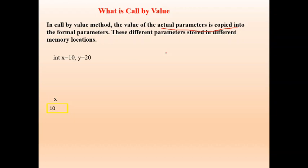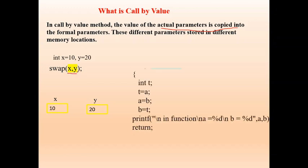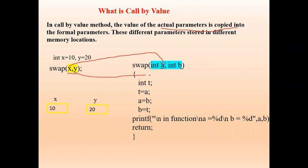Now consider a small example. x is 10, y is 20. So x is stored in one memory location, and y is stored in another memory location. If I make a call — swap(x, y) — x and y are actual parameters. Consider this function definition: a and b are formal parameters. When a function call is made, the first formal parameter gets replaced by the first actual parameter, so a gets replaced by x, and b gets replaced by y.